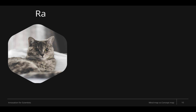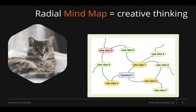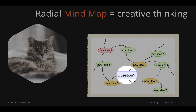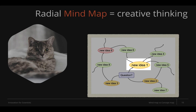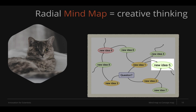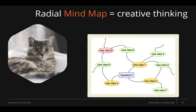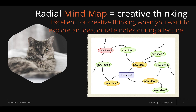There are different ways to design a mind map. The first one is the radial mind map, usually used when you need to develop creative thinking. This is an example of a radial mind map with a central question. From it, you develop the first ideas, words, or concepts that come to mind, then go to the next level with more details and other concepts related to the first ones. This type of mind map is excellent for creative thinking when you want to explore an idea or take notes during a lecture.